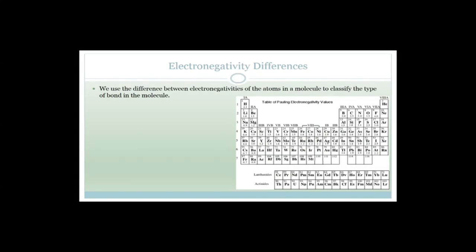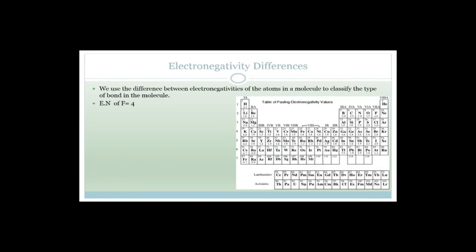Now let's talk about electronegativity differences. We use the difference between the electronegativities of atoms in a molecule to identify the type of bond — to classify it. So for example, fluorine is 4 and cesium is 0.7, so the electronegativity difference is 3.3. The bond becomes more polar as the difference increases from 0 to 3.3.